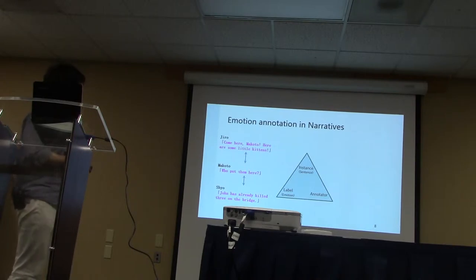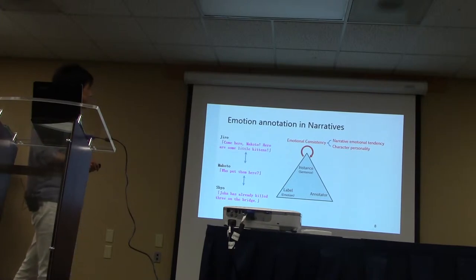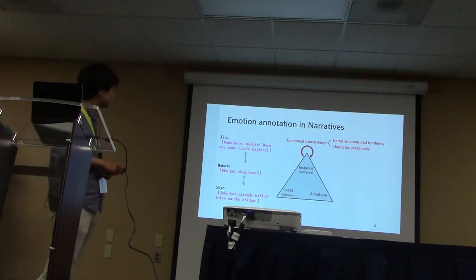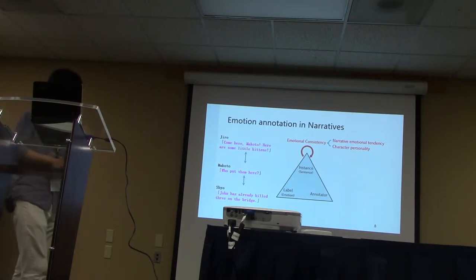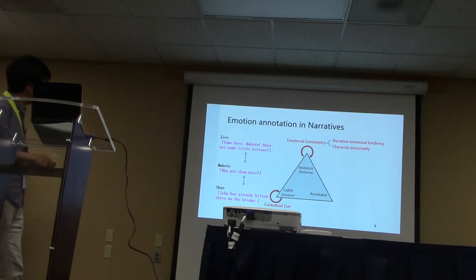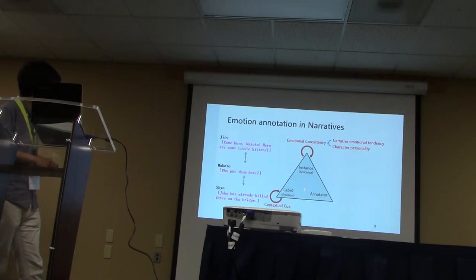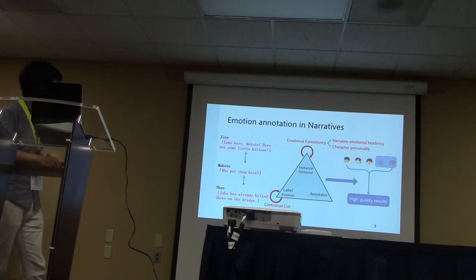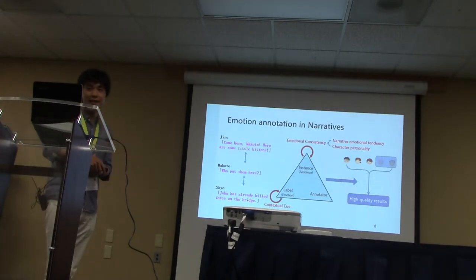Take narratives as an example. A narrative usually subjects to certain emotional tendencies, and the characters in a narrative tend to remain consistent across sentences in the same context. Moreover, the emotions expressed by a sentence may relate to the emotions expressed by subsequent sentences. So if we take the internal relationships among instances and among labels into consideration, it is expected to obtain high-quality results from annotations provided by fewer annotators and further save the cost.